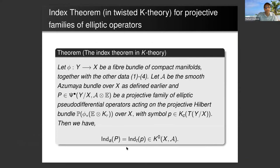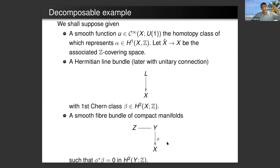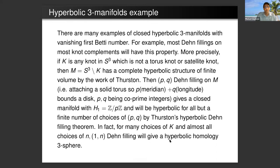The index theorem that we prove is that the analytic index is equal to the topological index which is in the twisted K-theory of X. It generalizes and reduces to the Atiyah-Singer families index. Let me go on to the hyperbolic three manifold example because this is a new example.